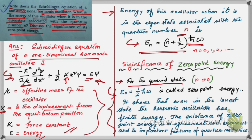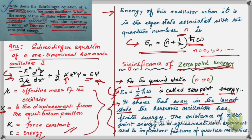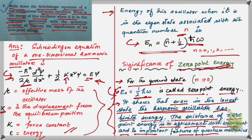The zero-point energy is given by E₀ = ½ℏω, where ℏ is the reduced Planck's constant. This is called zero-point energy. It shows that even in the lowest state of the harmonic oscillator, it has finite energy. The existence of this zero-point energy is in agreement with experiment and is important for the future of quantum mechanics.